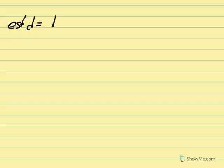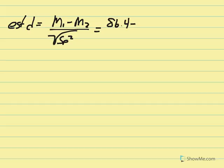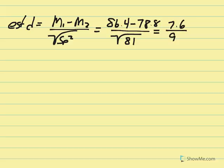Although not asked, I'll calculate estimated d and r squared as additional effect size measures. Estimated d equals the sample mean difference over the square root of pooled variance. The mean difference was 7.6, and the square root of pooled variance 81 is 9. So d equals 7.6 over 9, giving 0.84 — a very high effect size.